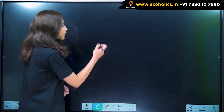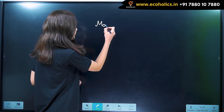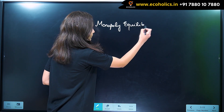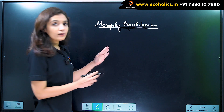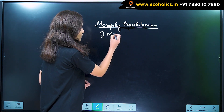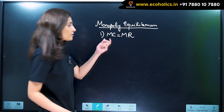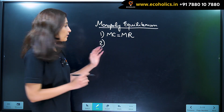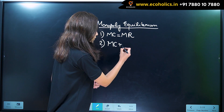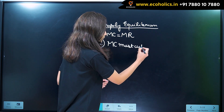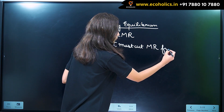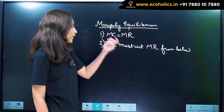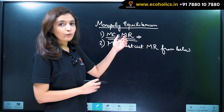The conditions for monopoly equilibrium are: first, MC should be equal to MR — that is, marginal cost should be equal to marginal revenue. And the second condition is that the MC curve must cut the MR curve from below. These are the two conditions for monopoly to be in equilibrium.